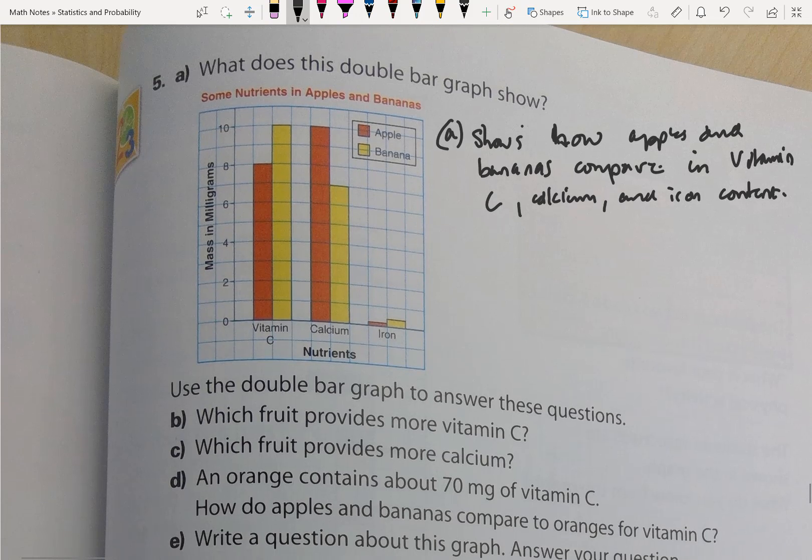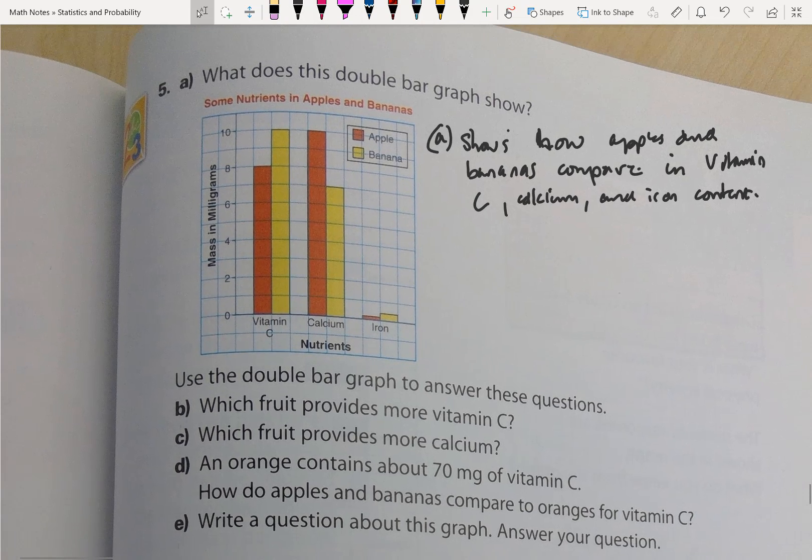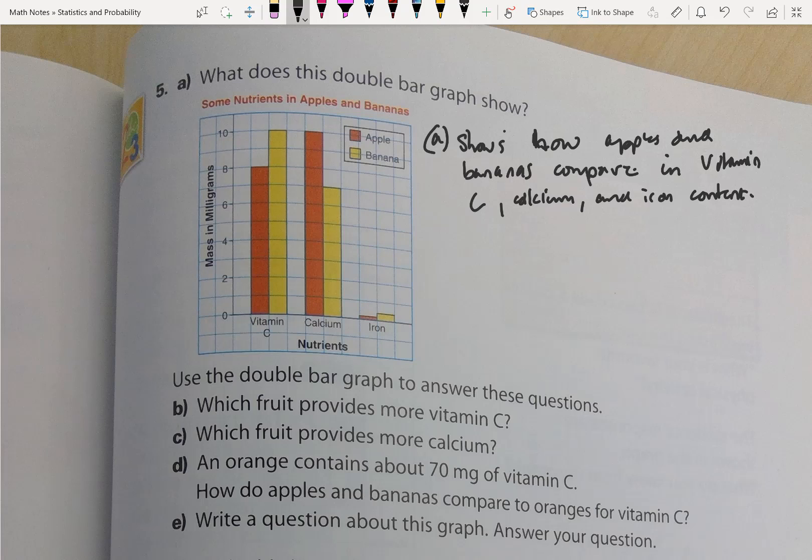Question B: Which fruit provides more vitamin C? Well, we can see right here quickly, this is the great thing about double bar graphs, you can quickly make a comparison. Bananas have more vitamin C. Which fruit provides more calcium? Well, that would be apples.